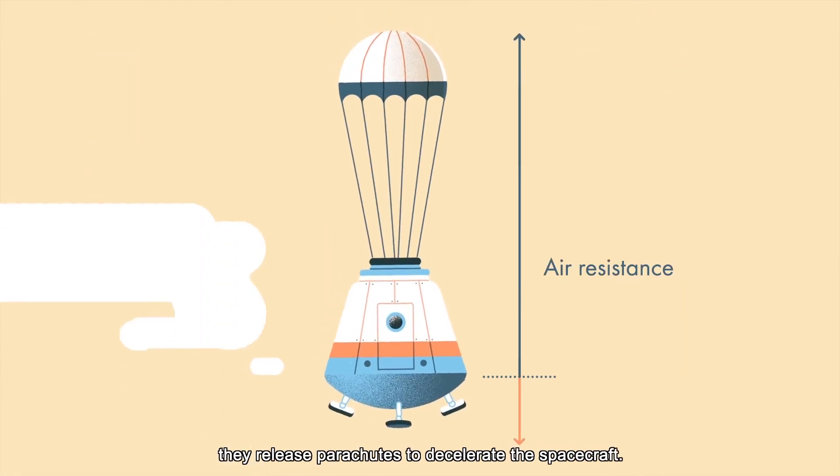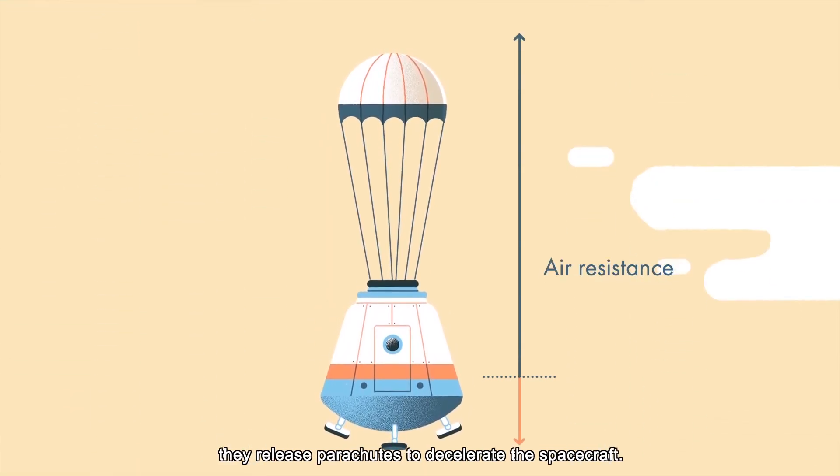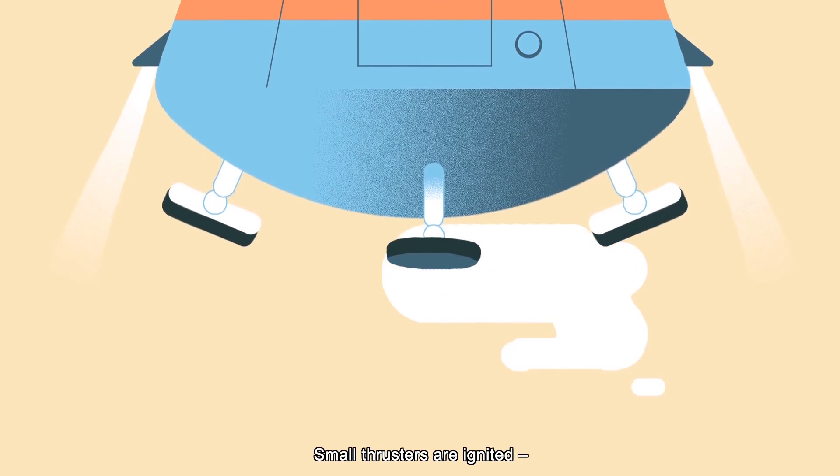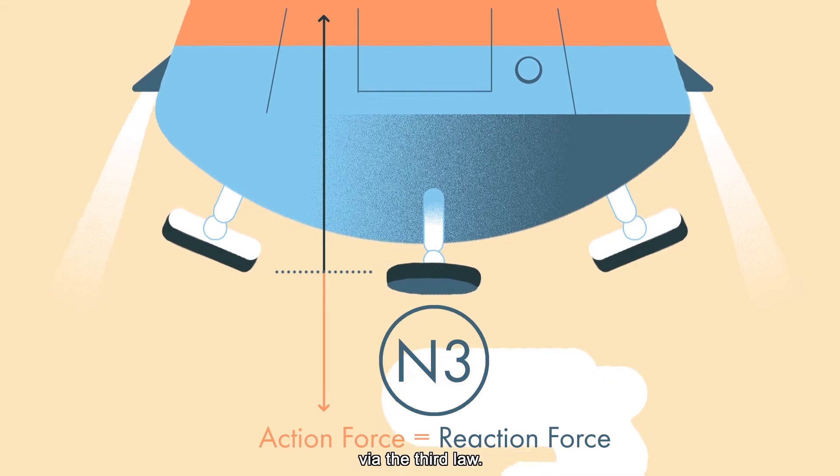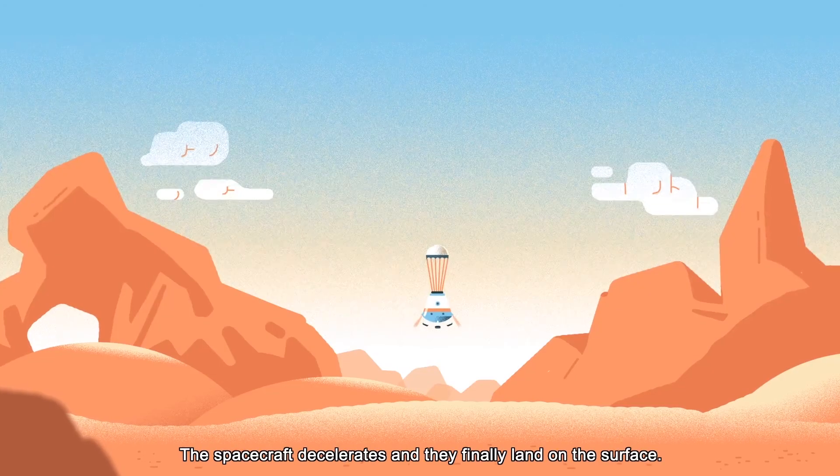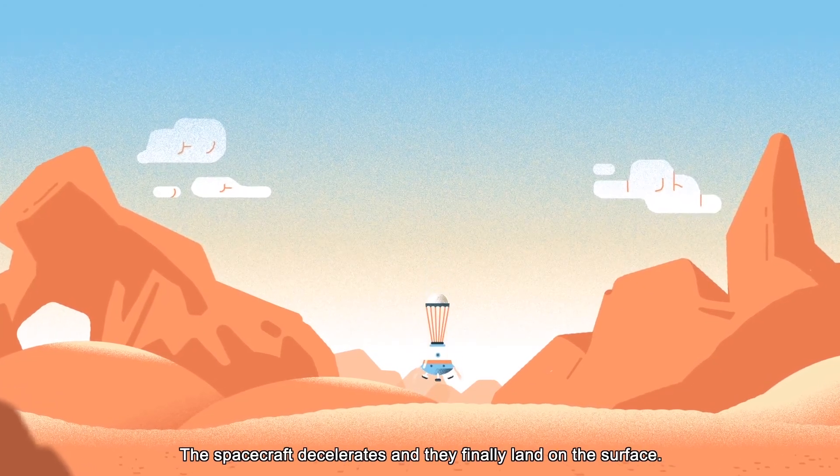Upon entering the Martian atmosphere, they release parachutes to decelerate the spacecraft. Small thrusters are ignited. The gas is expelled downwards producing upwards force on the spacecraft, via the third law. The spacecraft decelerates and they finally land on the surface.